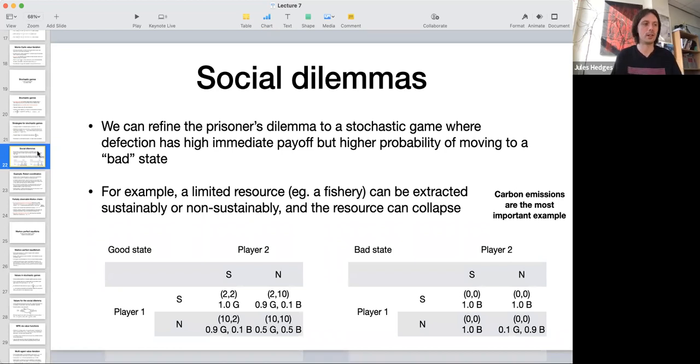This is a very expressive setting for talking about real life situations. The prisoner's dilemma is supposed to be a simple model of what's called a social dilemma, where the thing that is individually optimal and the thing that is globally optimal conflict with each other.